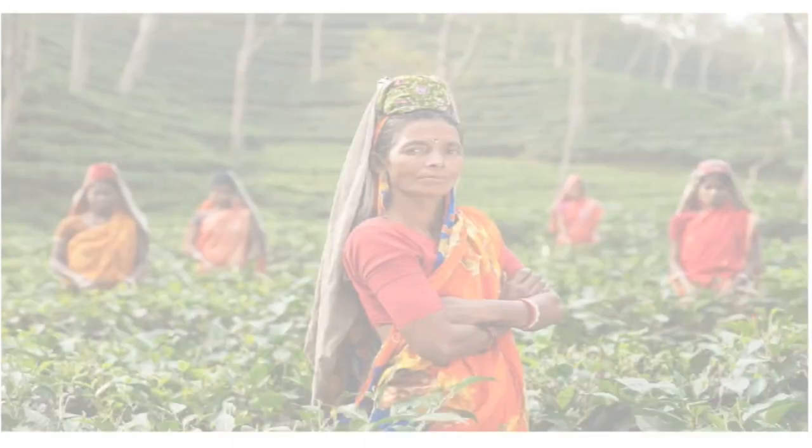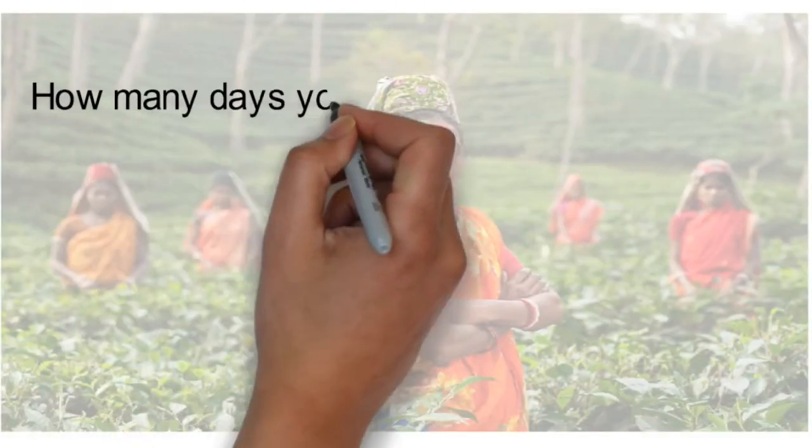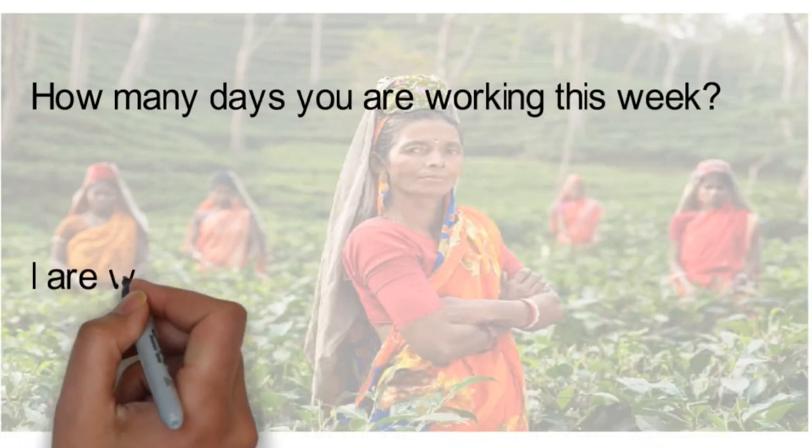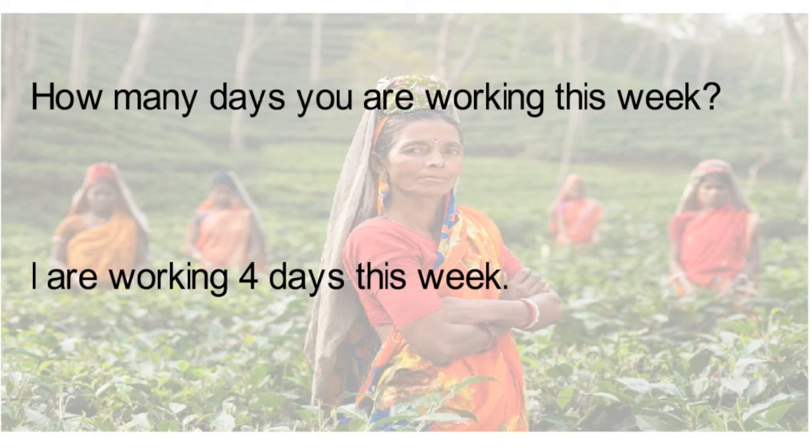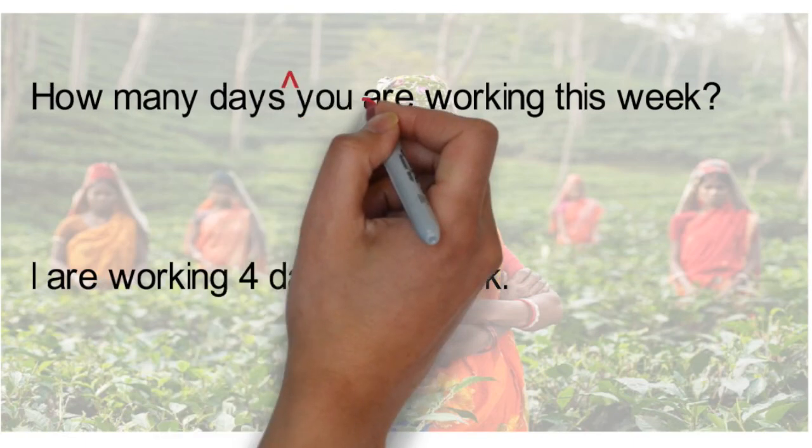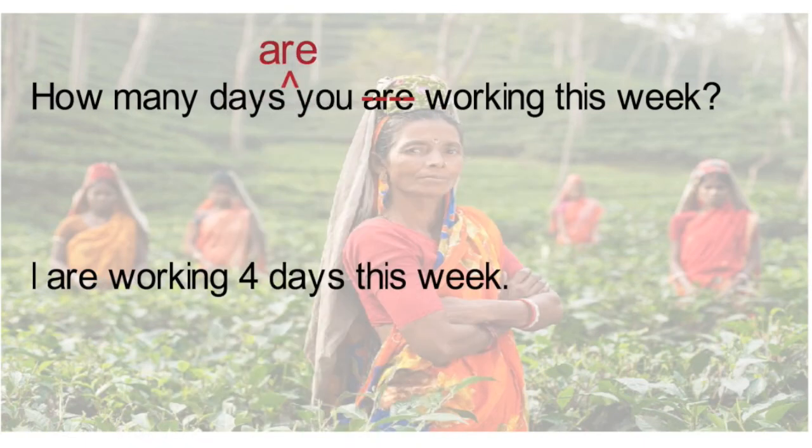Let's look at this question. How many days you are working this week? I are working four days this week. This is a little bit tricky, and you will need to think. The correct answer should be, how many days are you working this week? Days is not the subject of the sentence. You is the subject, so it goes between the verb to be and working. The answer should be, I am working four days this week. I is the subject, and am agrees with I.